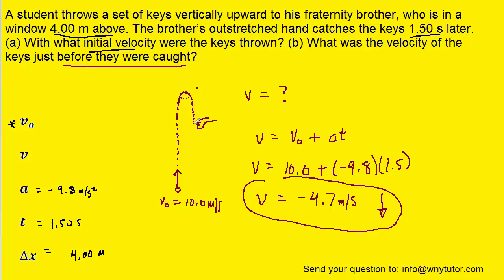He actually caught the keys on the way down as opposed to on the way up. So, an interesting result. But, again, the final answer for part B would be 4.7 meters per second downward.